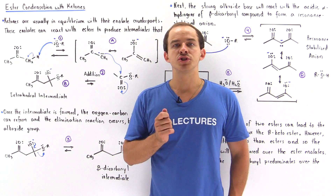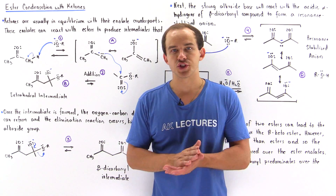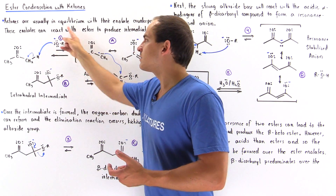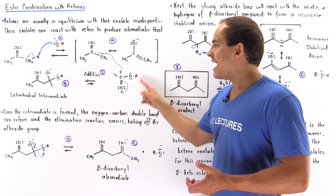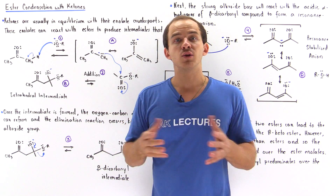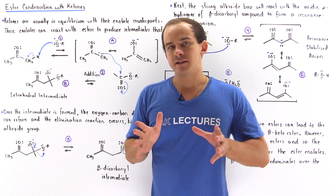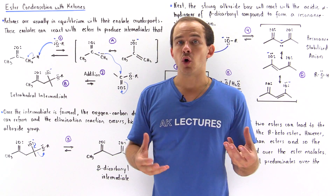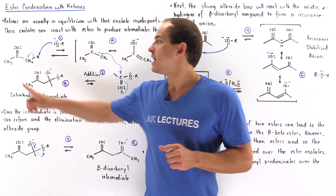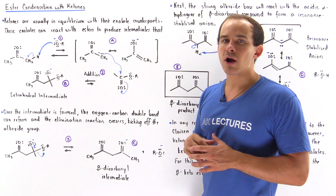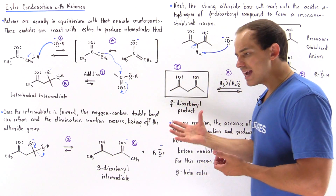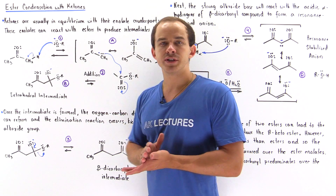Condensation of an ester can also take place with ketones. So let's suppose we take a ketone, an alkoxide base, and an ester and place them into a single mixture. What exactly will take place? Basically, a combined aldol-Claisen condensation reaction will take place between the ketone and the ester. So what exactly is the first step of this reaction and why does it actually take place?